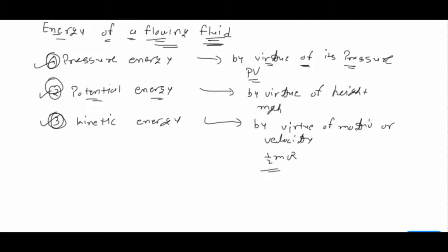The second one is potential energy. It is the energy possessed by the liquid by virtue of its height. If you are considering any basic datum level or earth surface, and there is an element at height h, then it has some potential energy stored. The formula is mgh, as we learned at the start of this fluid mechanics theory.